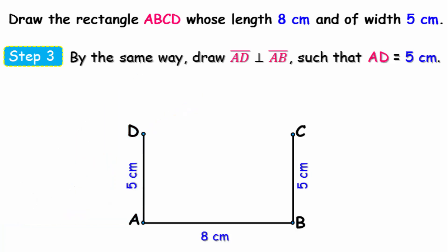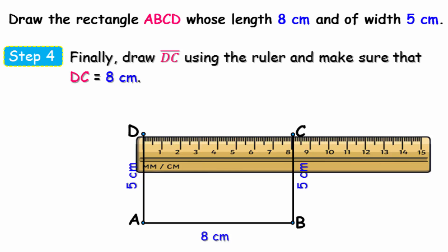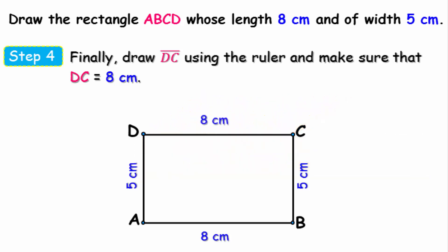Finally, the last step is that we connect a straight line between points C and D using a ruler and make sure that the length of DC is 8 centimeters. So we get the final shape of the rectangle ABCD with a length 8 centimeters and a width 5 centimeters.